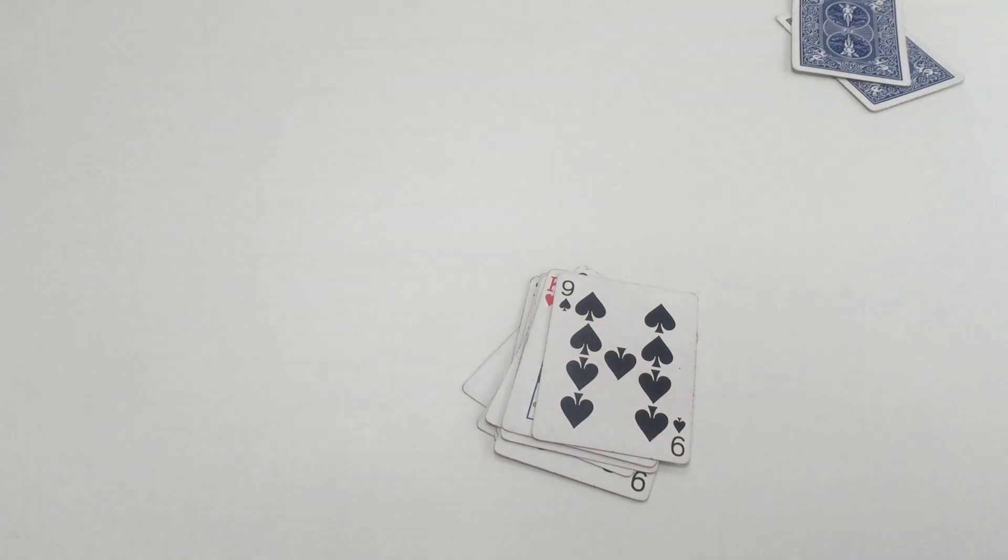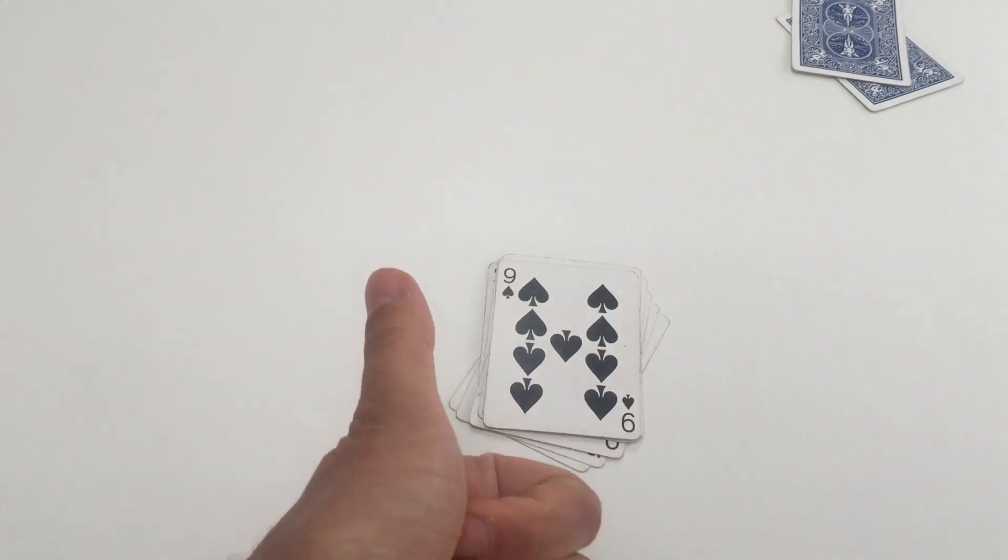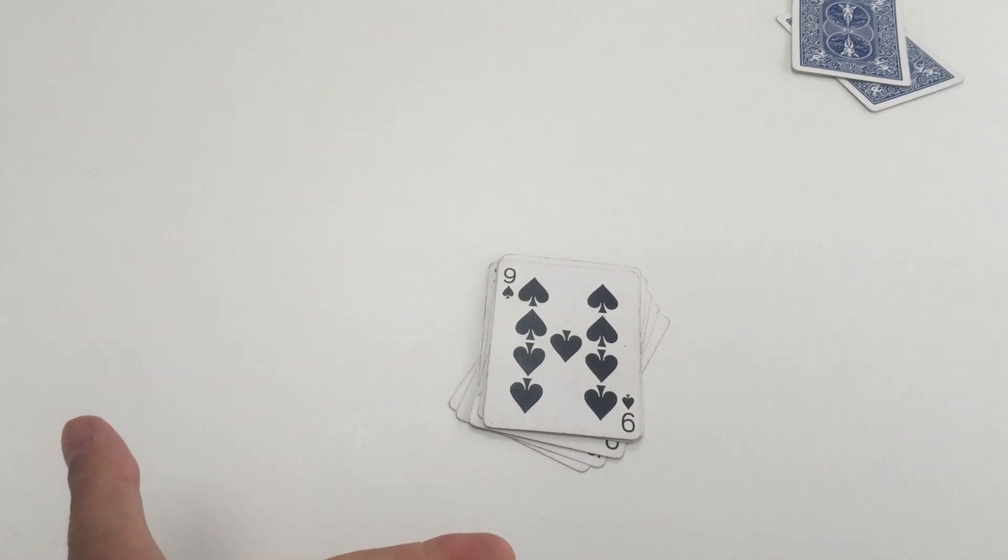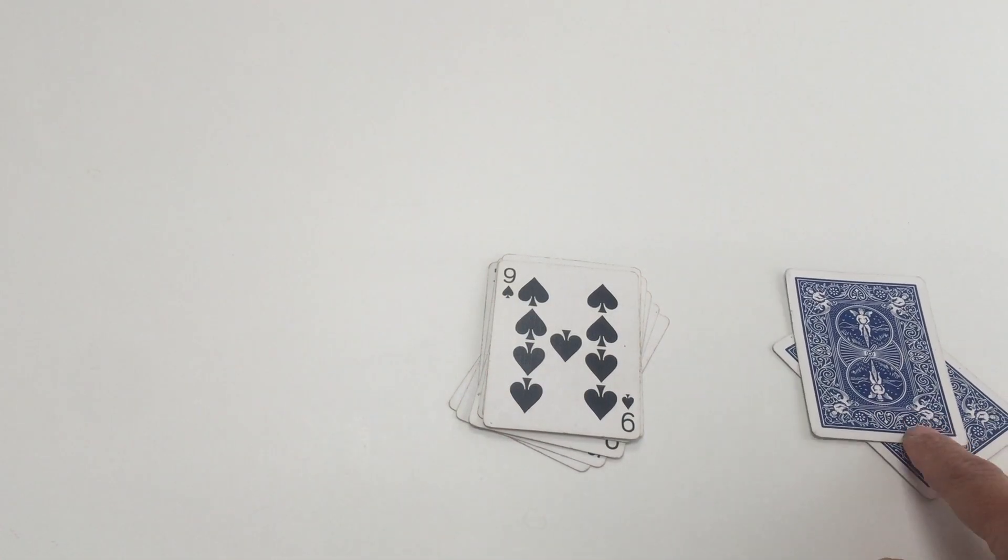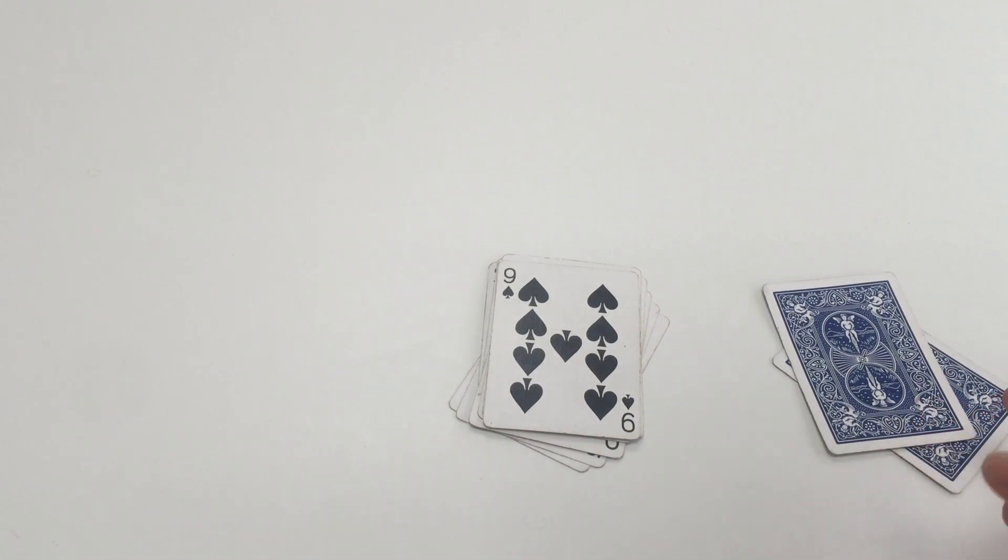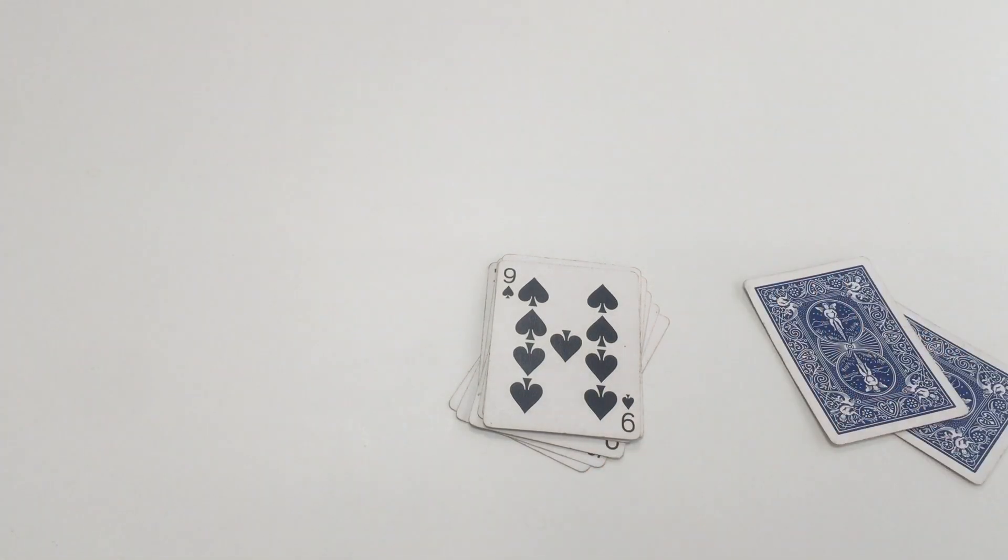So we're left now with one pile. Now you might be left at the end of this with either one pile, two piles, or no piles. If you get no piles, then these two cards have a value of 10. They're a 10 or a face card. Or they could be two fives actually, so watch out for that. But they're probably two face cards if you've got no piles left.